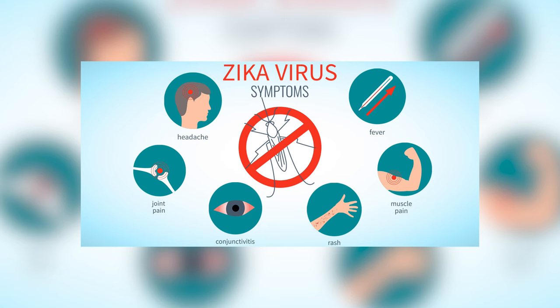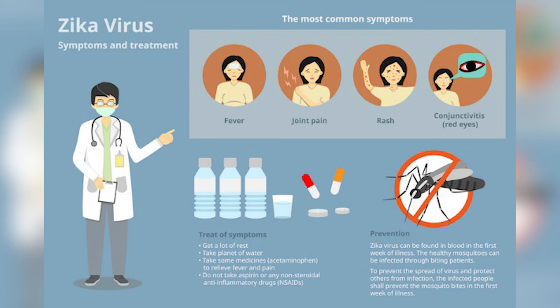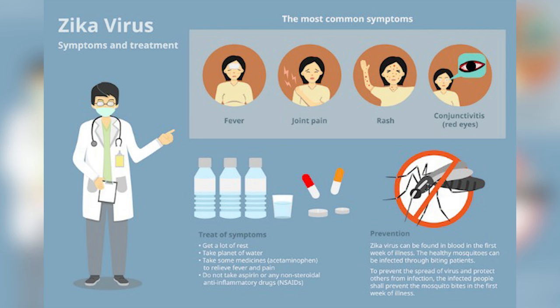Headache; pain located behind the eyes with movement; muscle and/or bone pain; joint pain; rash; hemorrhagic manifestations, which can be small red spots or bruising on the skin, nosebleeds, bleeding gums, blood in the vomit, urine or stool, or vaginal bleeding; and a low white blood cell count on a blood test.